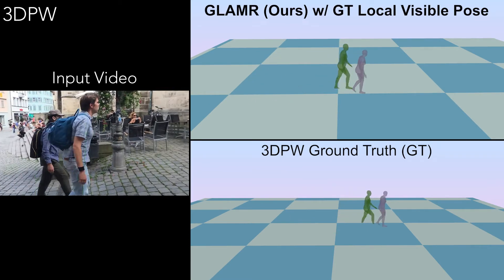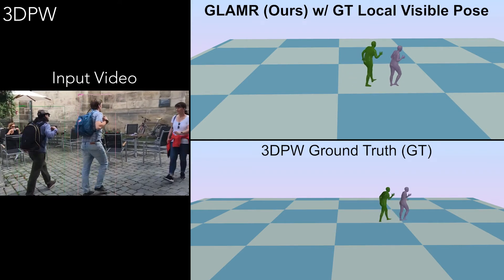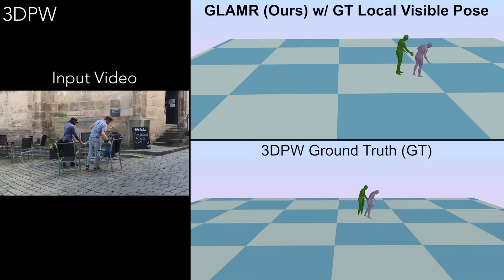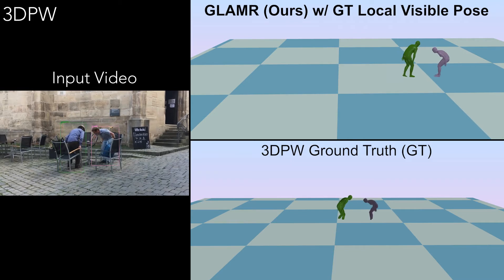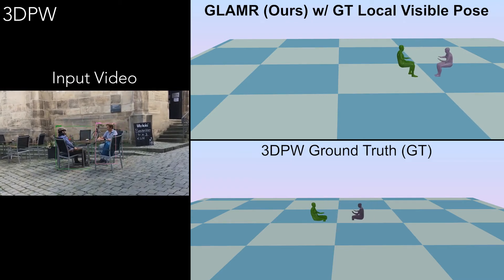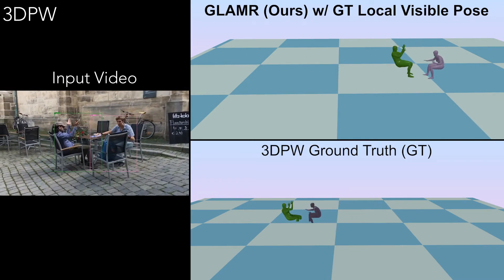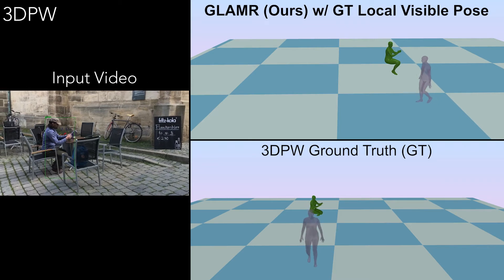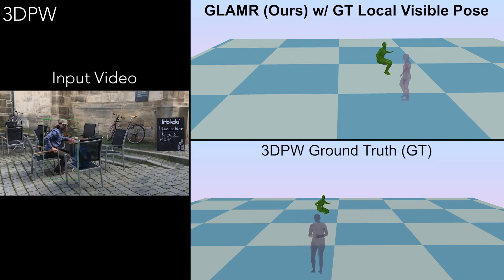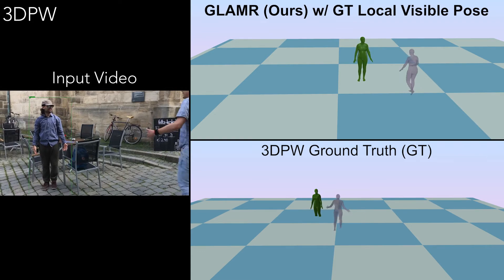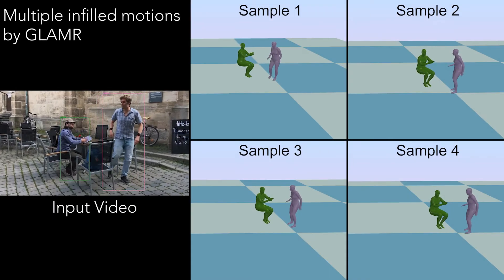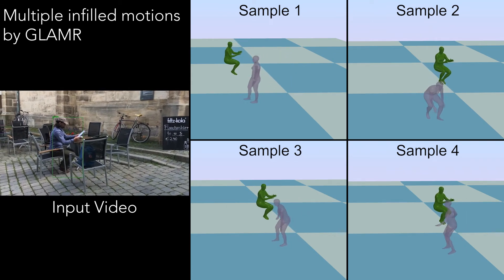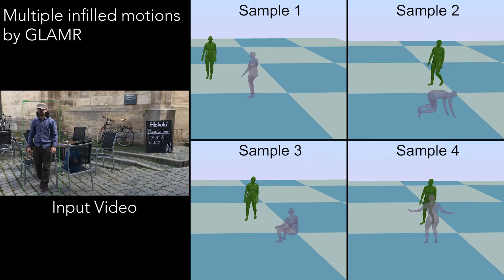Our method can estimate high-quality global human trajectories that are even better than the ground truth provided by the 3DPW dataset. Because our method is generative, we can infill multiple plausible human motions for the occluded humans, as we showcase here.